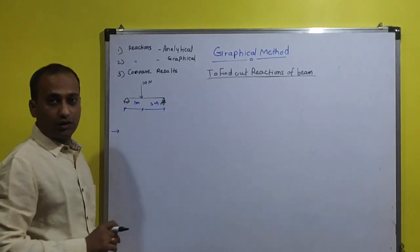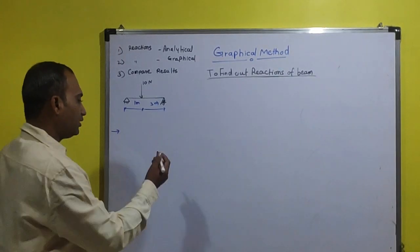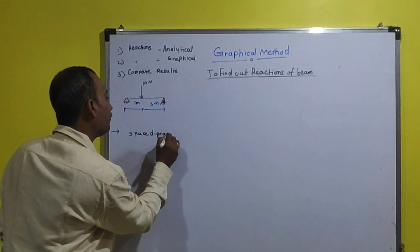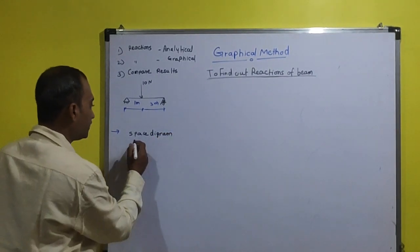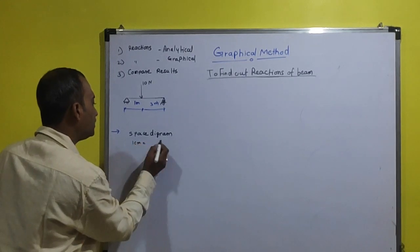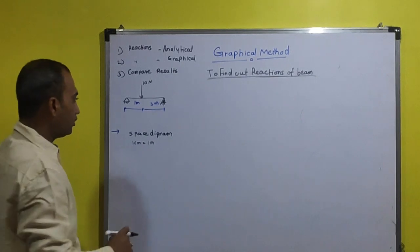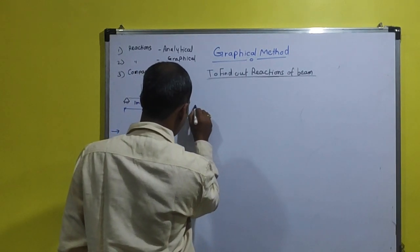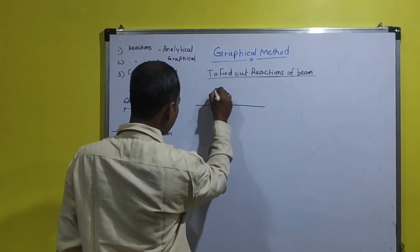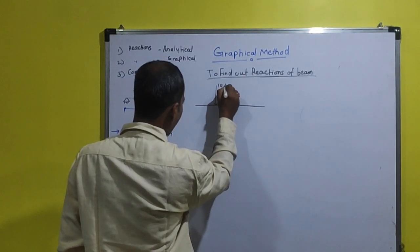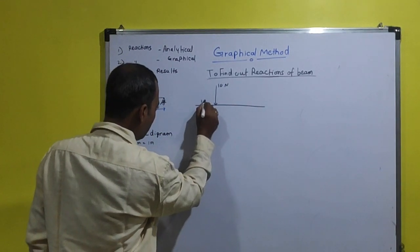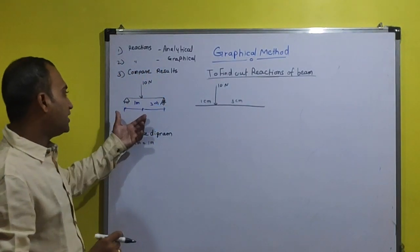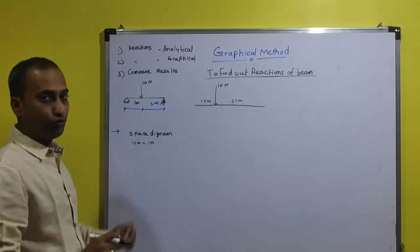First we will draw this diagram with scale, and it will be called the space diagram. For this space diagram we need to decide a scale. Let's consider 1 centimeter is equal to 1 meter. Then we redraw the beam by scale — the first length will be 1 centimeter and the next will be 3 centimeters. As this is a simply supported beam, the reaction will be only in the upward direction.